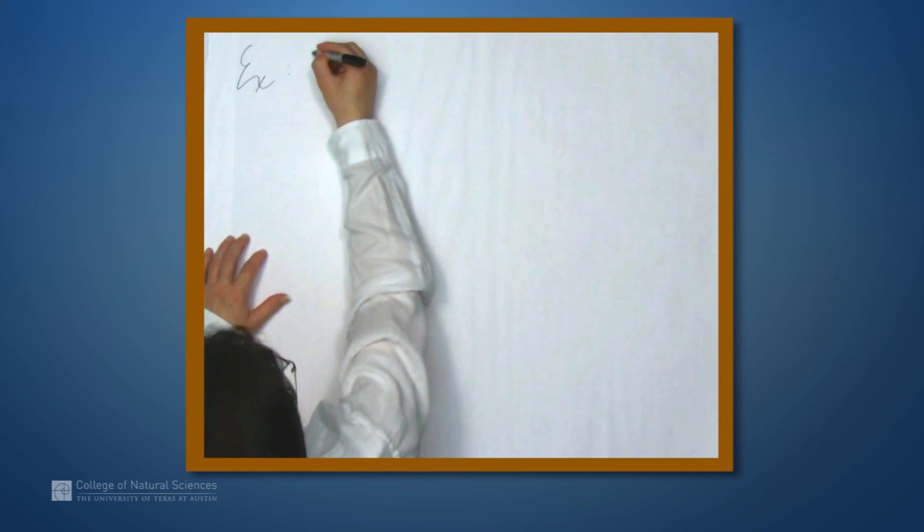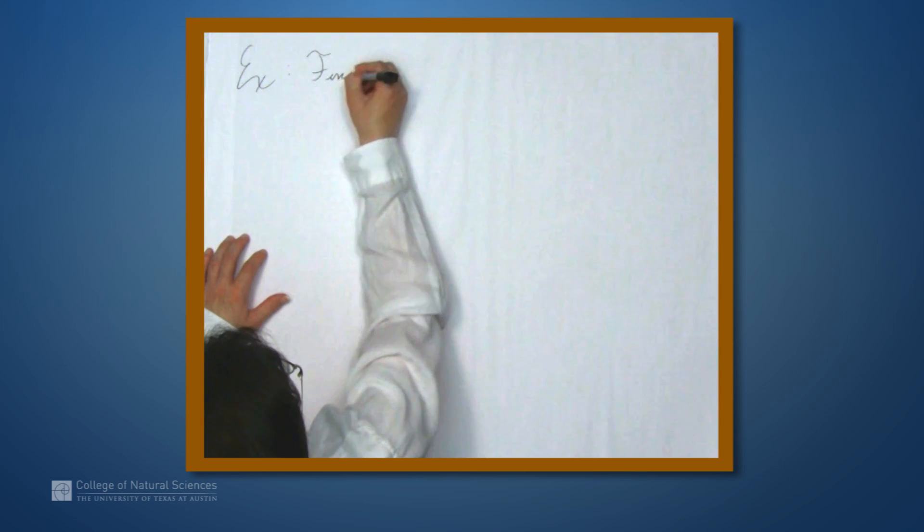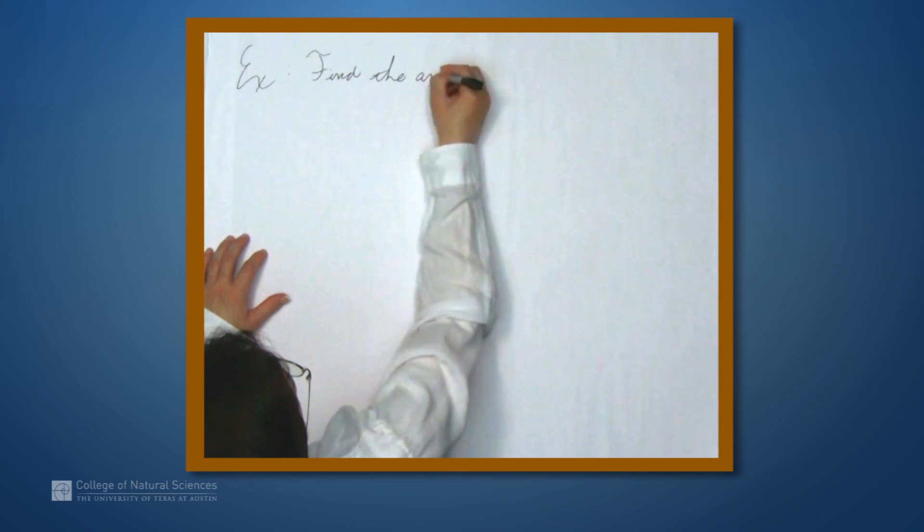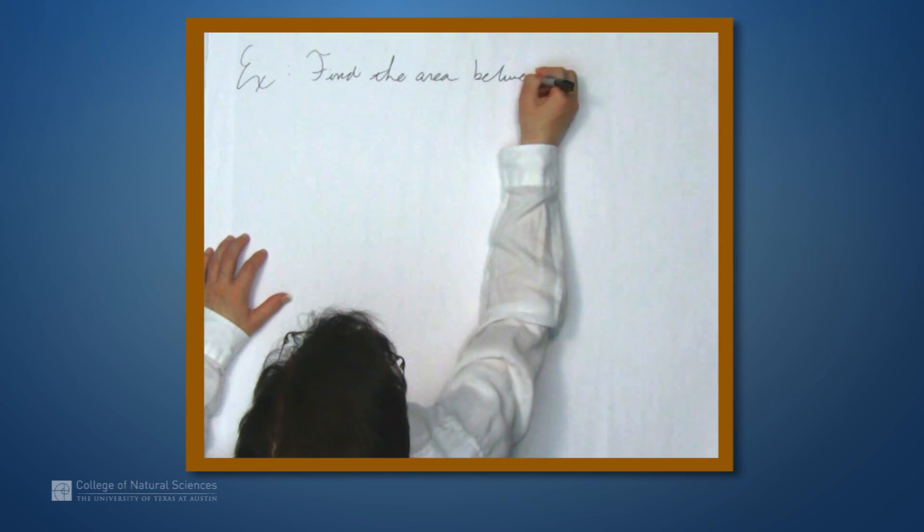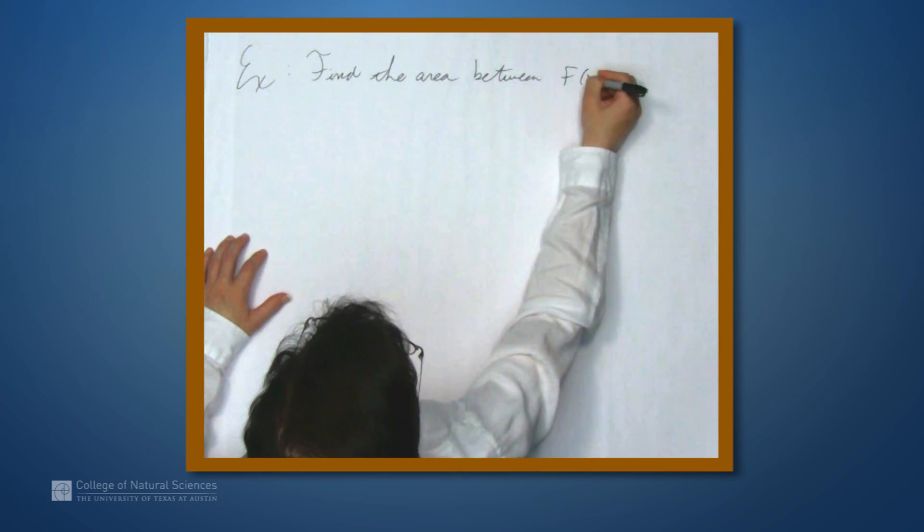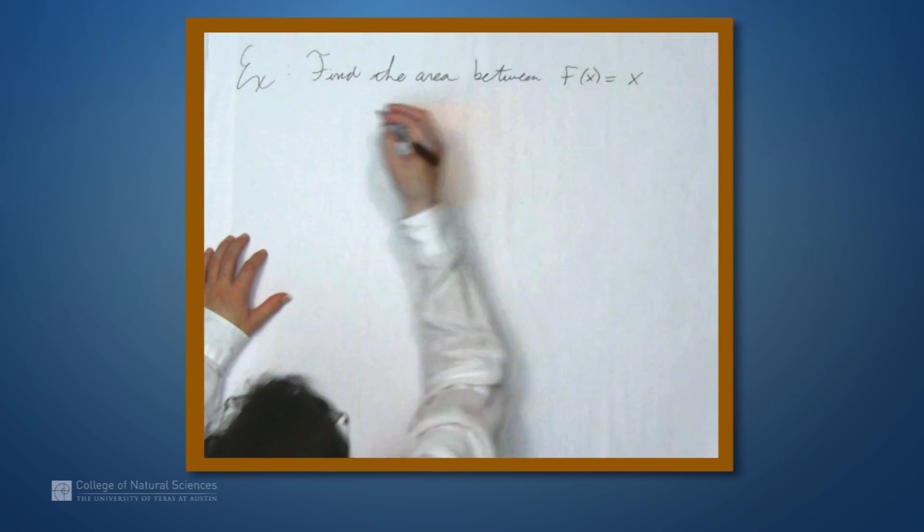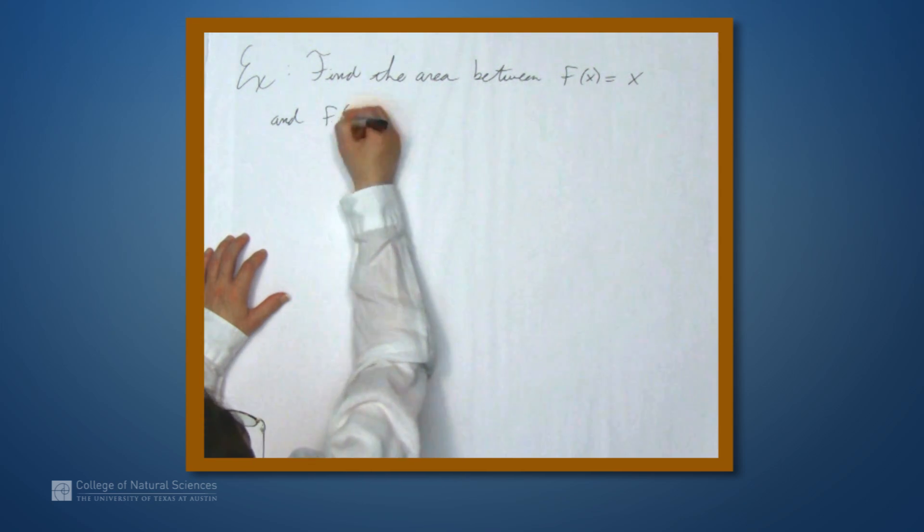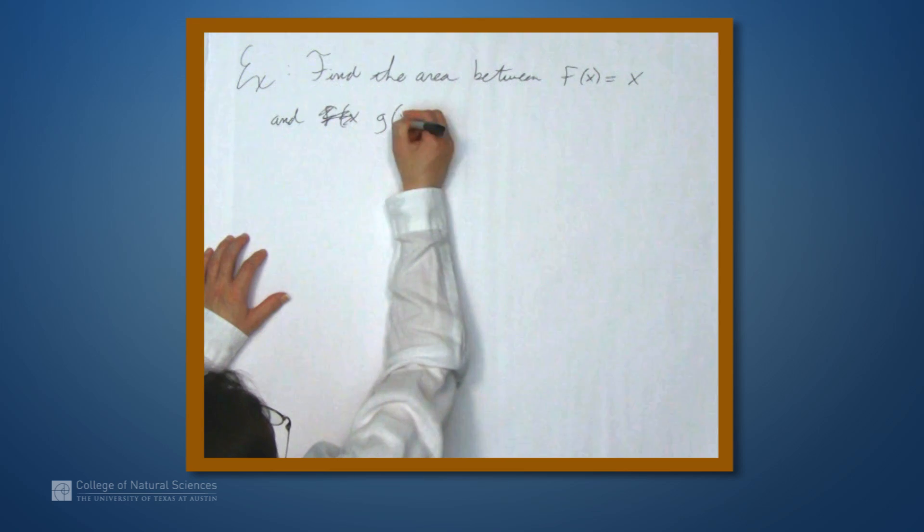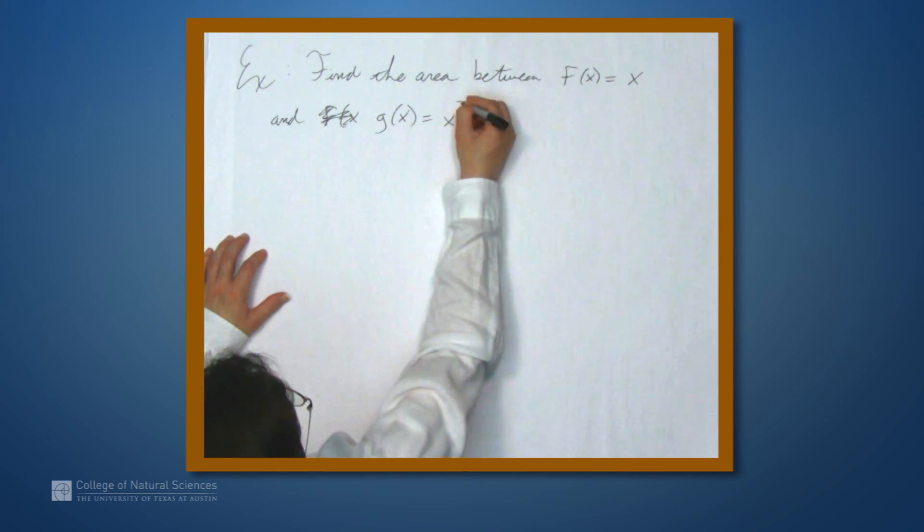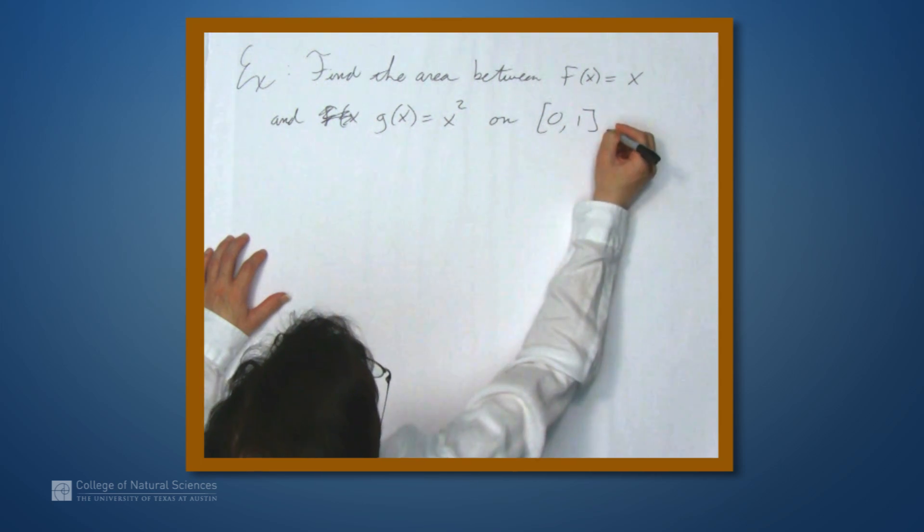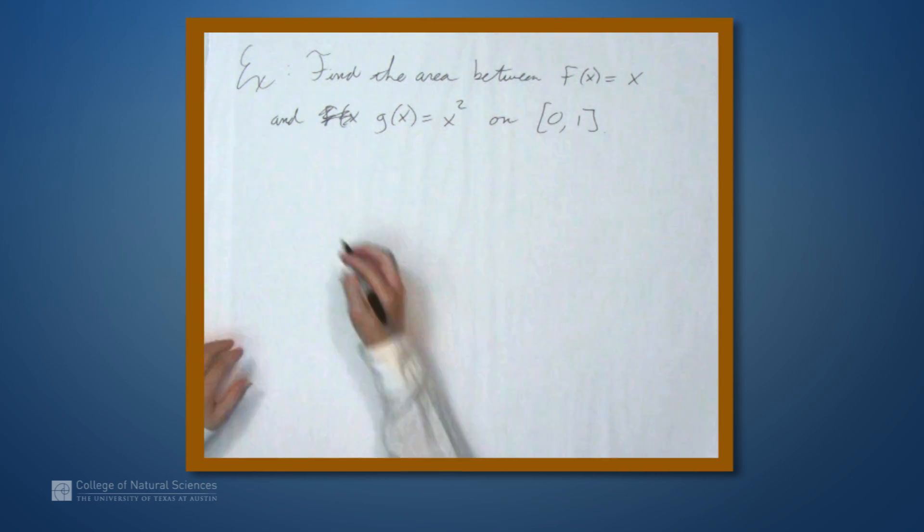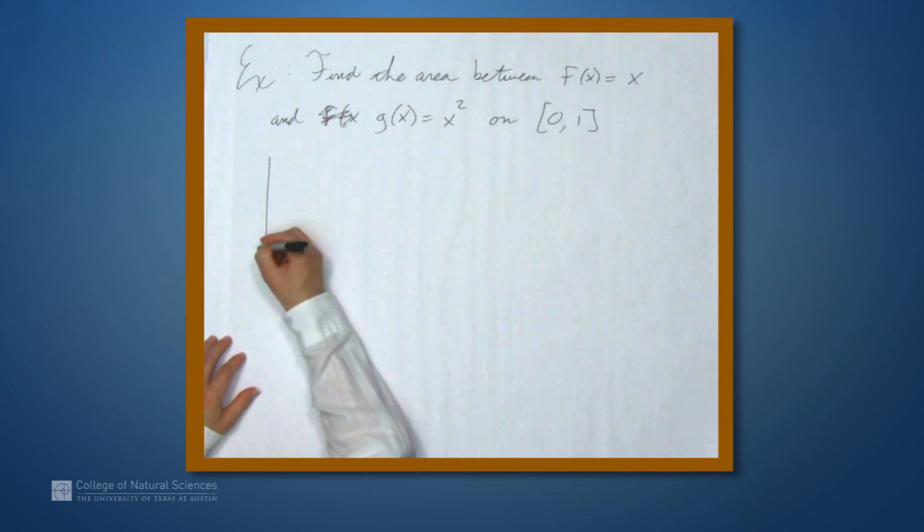So let's find the area between, say, f of x equals x, and g of x equals x squared, on the interval from 0 to 1. So first thing we should do is graph this.